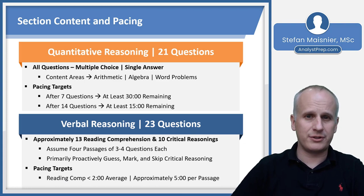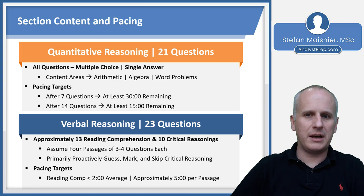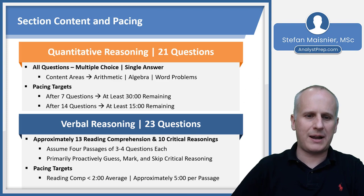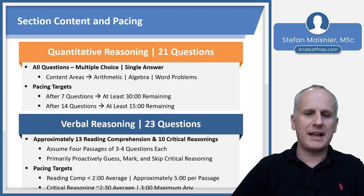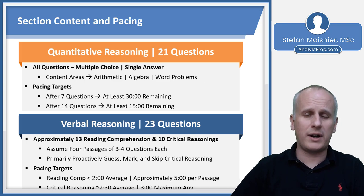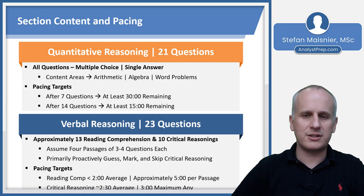For pacing in Verbal, it's more based on question type than where you are in the section. For Reading Comprehension, aim for a little under two minutes per question on average and about five minutes per passage. Extrapolating: four passages at five minutes each leaves you 25 minutes for the 10 Critical Reasoning questions — that's two and a half minutes each. You'll have a hard three-minute maximum for any Critical Reasoning, but spend more time on average with CR because they require more specific attention to detail than Reading Comprehension, especially after you've read an entire passage.